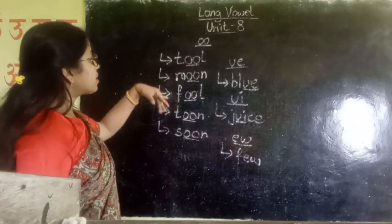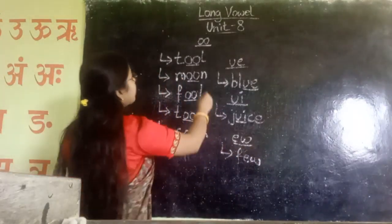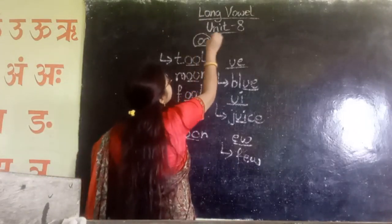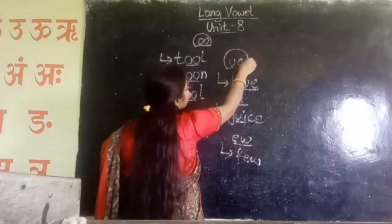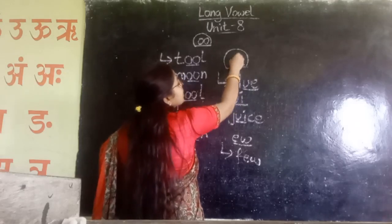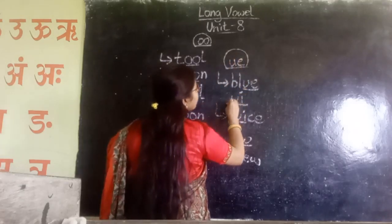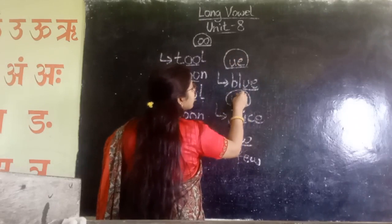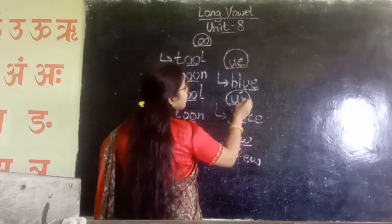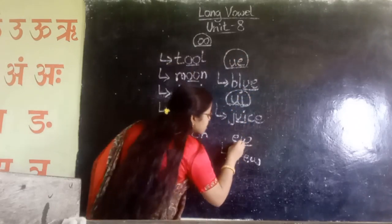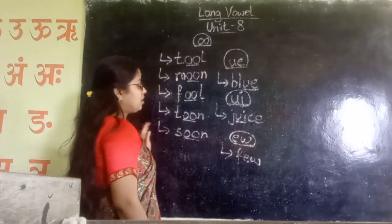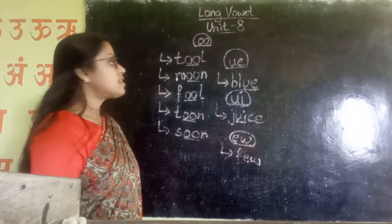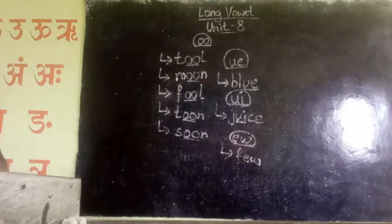Okay, in Unit 8 we have learned this OO sound with the letter W, this OO sound with the letters U and E, this OO sound with the letters U and I, and this OO sound which is E and W. Clear? Thank you.